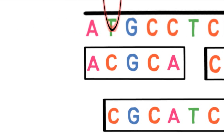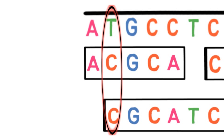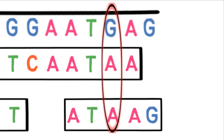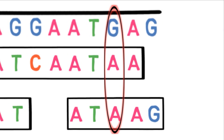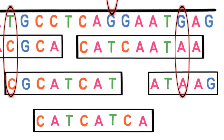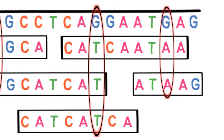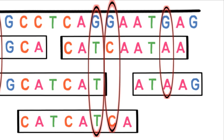On average, there are about 15,000 variants, or changes in the DNA sequence of the exome, in any person we sequence.